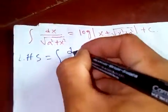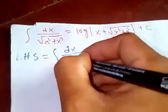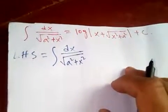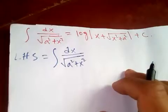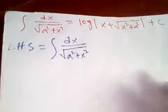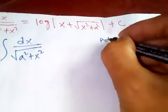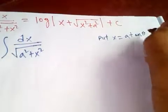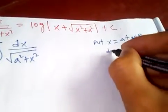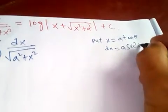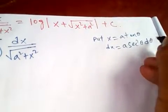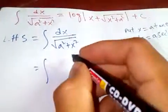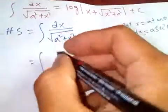The left-hand side is the integral of dx over square root of a squared plus x squared. Now in this we are going to use the substitution method. Put x equal to a·tan θ, so dx will be a·sec²θ dθ.